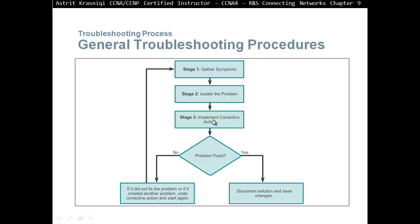Then implement a corrective action. For example, maybe that website has been denied in an access list in the firewall or something, and then you see whether the problem has been fixed. If the problem has been fixed, then you should document that solution and save the changes. Documenting helps in case in the future we have similar problems, then we can look at documentation and find an answer right away. If the problem has not been fixed, you need to undo what you did. That's a major thing here.